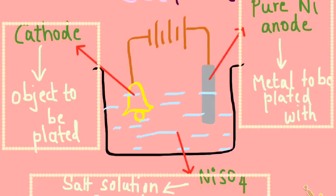Now, the salt solution that will be taken in this case is nickel sulfate or NiSO4. Remember that the salt solution should have the metal of the anode. That's why the anode is pure nickel here and the respective salt solution, i.e. nickel sulfate, is in the electrolyte.